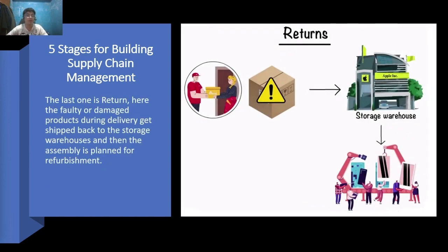The last stage is return. Here, faulty or damaged products during delivery get shipped back to the storage warehouses, and then the assembly plant plans for refurbishment. This last phase controls the return of defective or damaged products by customers. This level of supply chain is frequently a source of contention for many businesses. Supply chain planners must devise a responsive and adaptive network for receiving damaged, faulty, and additional items from consumers and expediting the return procedure for customers concerned with supplied products.